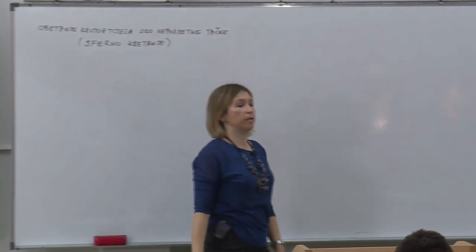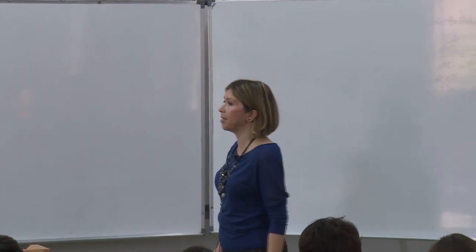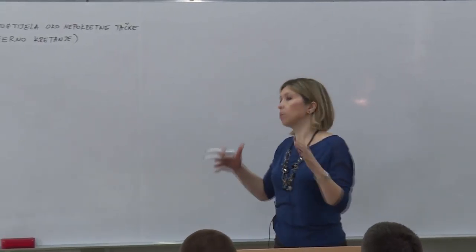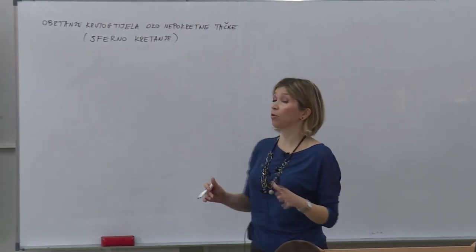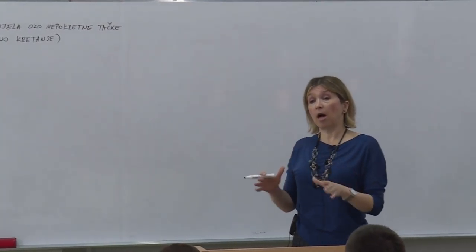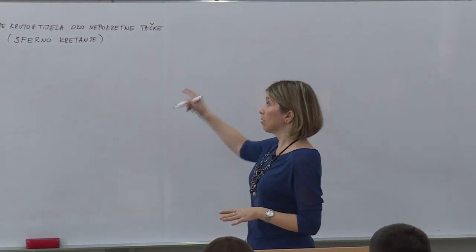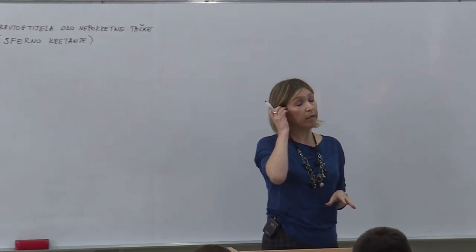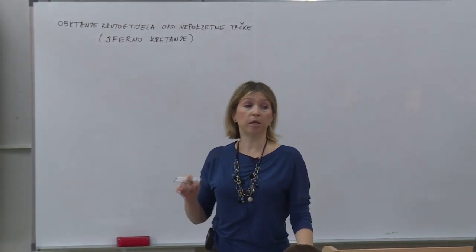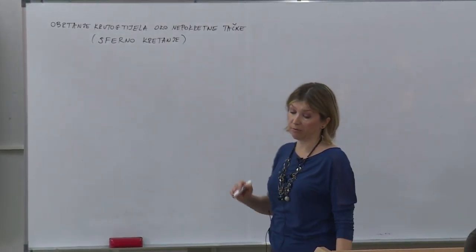Ili sferno kretanje — obrtanje oko nepokretne tačke nazivamo i sferno kretanje. Sama lekcija sadržajno će biti koncipirana kao i one prethodne: definicija kretanja, stepeni slobode, odnosno zakon kretanja, konačne jednačine kretanja. Uvest ćemo teoremu sličnu ovoj o kojoj smo malo prije pričali i pokazati kinematske karakteristike tijela kao cjeline, brzinu i ubrzanje neke konkretne tačke tijela koje izvodi sferno kretanje.